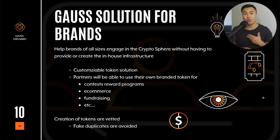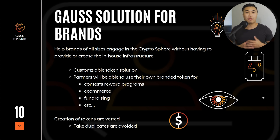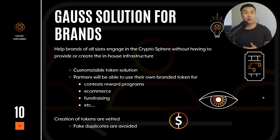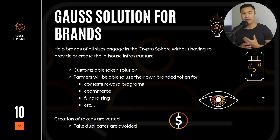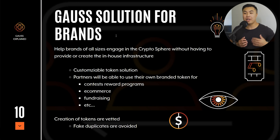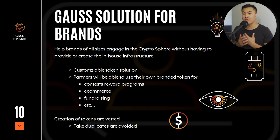With brands working with Goss, they can actually create a customizable token solution and use their own branded token for a wide variety of things — contests, e-commerce, and fundraising. With Goss being able to create a layer one blockchain, they can vet the tokens, so the only tokens that can be launched are vetted and audited. Fake scam tokens or duplicates can be avoided, which really helps create a safe space where brands can be authentic. This also assures their audience that they're accessing the right branded tokens, and Goss is providing an ecosystem that allows for brands to create incentive-based tokens with full security.